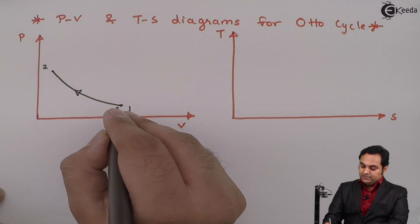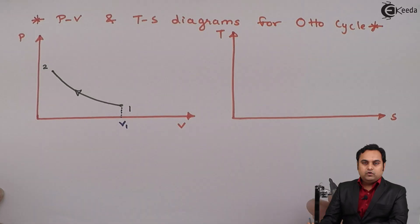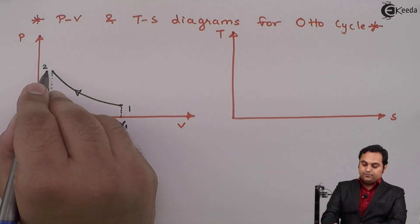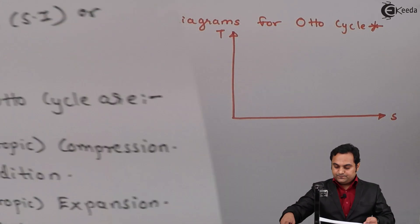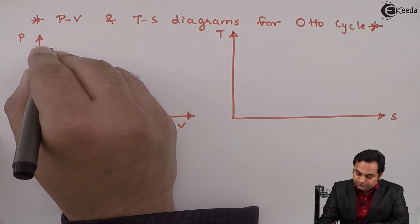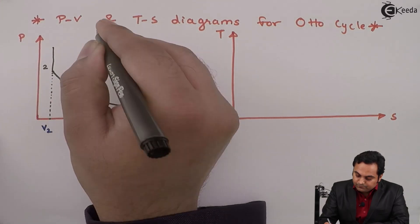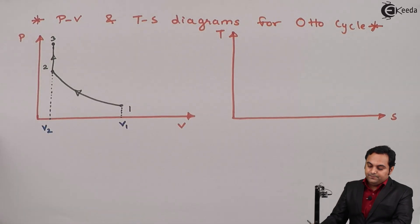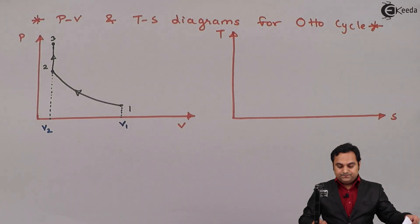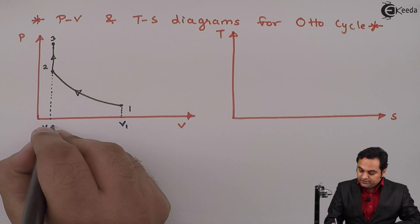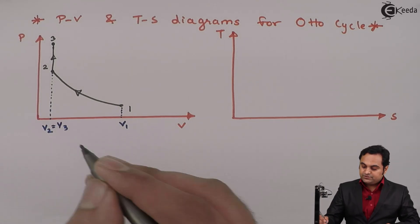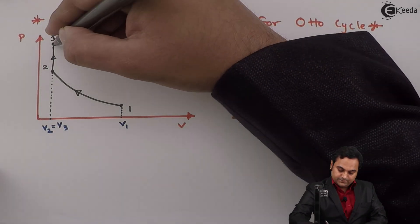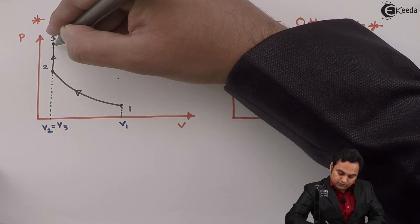At point 1, the volume V1 is more; at point 2, the volume V2 is less — so it is reversible isentropic compression. The second process was constant volume heat addition, so from point 2 to point 3 the volume remains constant, heat gets added, and pressure increases. Therefore V2 equals V3. The next process, 3 to 4, is reversible adiabatic isentropic expansion, which again follows a curve.